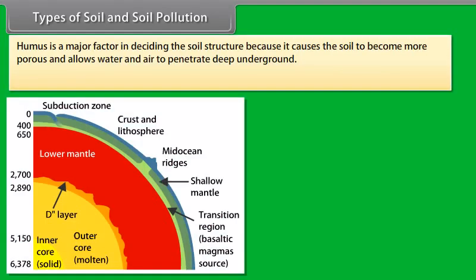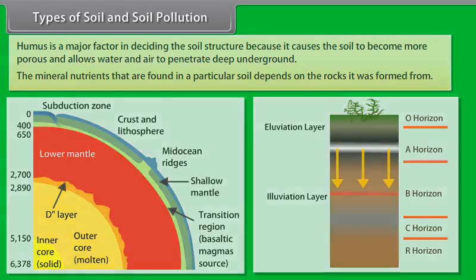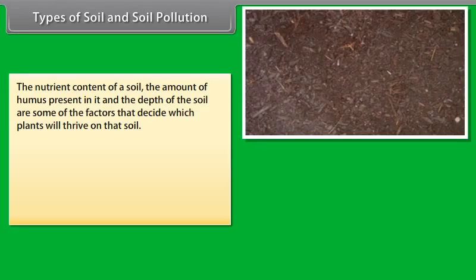Humus is a major factor in deciding the soil structure because it causes the soil to become more porous and allows water and air to penetrate deep underground. The mineral nutrients that are found in a particular soil depends on the rocks it was formed from. The nutrient content of a soil, the amount of humus present in it and the depth of the soil are some of the factors that decide which plants will thrive on that soil.